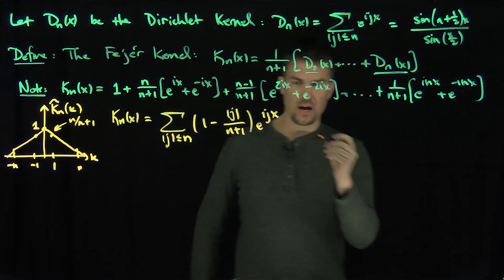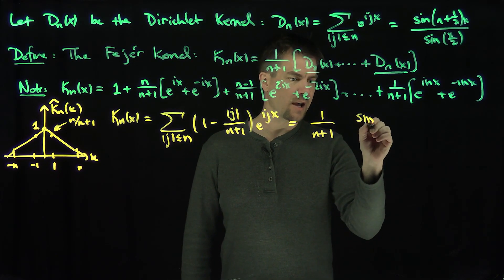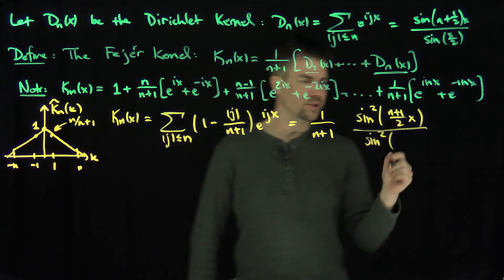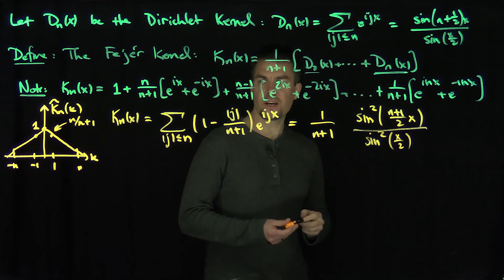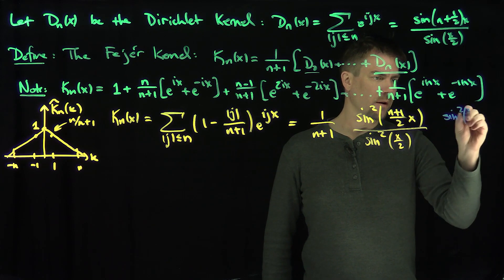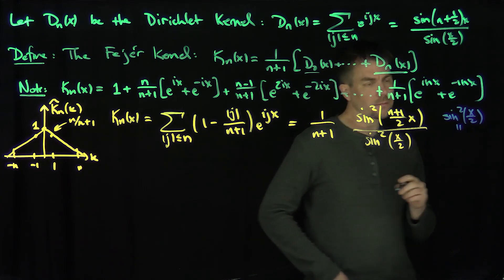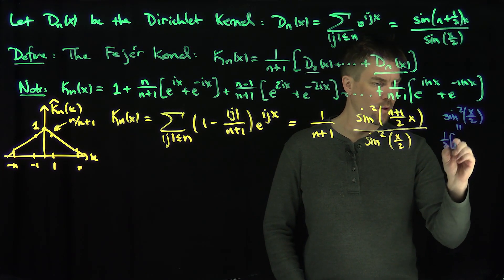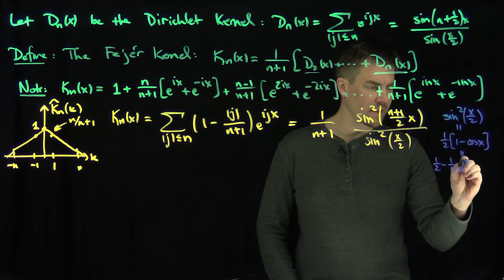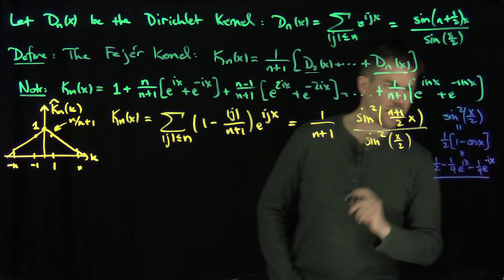The beautiful thing — and we'll prove this now — is that the Fejér kernel also equals 1 over (n+1) times sine squared of ((n+1)/2 · x) over sine squared of (x/2). That's our proposition. The key tool is the trigonometric identity: sine squared of (x/2) equals 1/2 times (1 minus cosine x), which in exponential form is 1/2 minus 1/4 e to the ix minus 1/4 e to the minus ix.